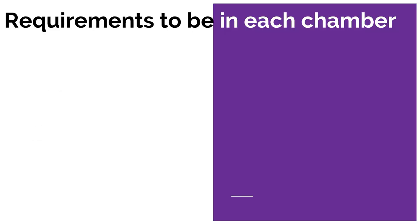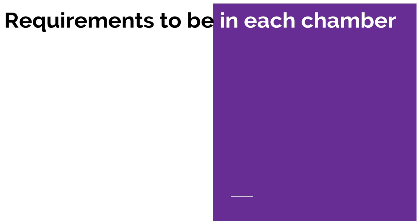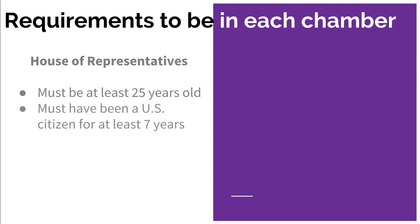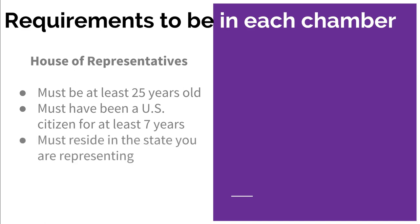Now we know why we have two chambers — let's look at the requirements if you want to someday run for office. To be in the House of Representatives, you must be at least 25 years old and you must have been a U.S. citizen for at least seven years. You do not have to have been born here — that's a requirement for the presidency — but you just have to have been a citizen for seven years. And you must live in the state you are representing. In the House, you're usually representing just part of the state.